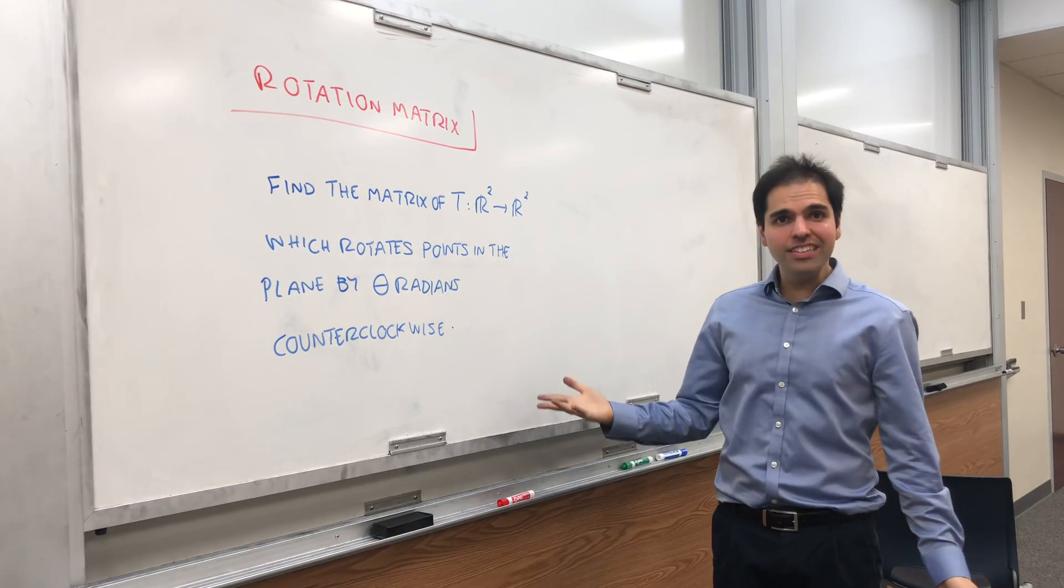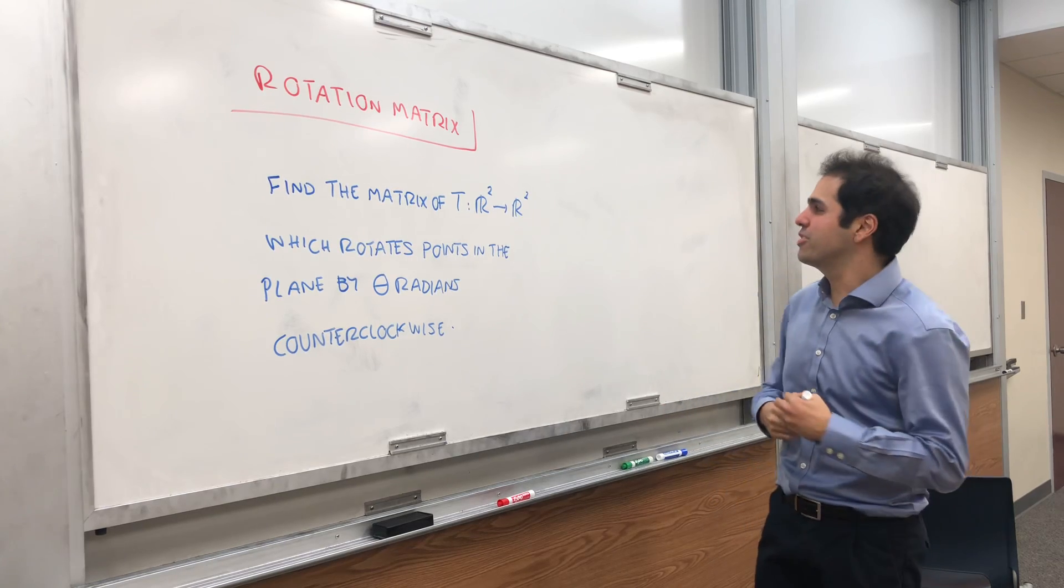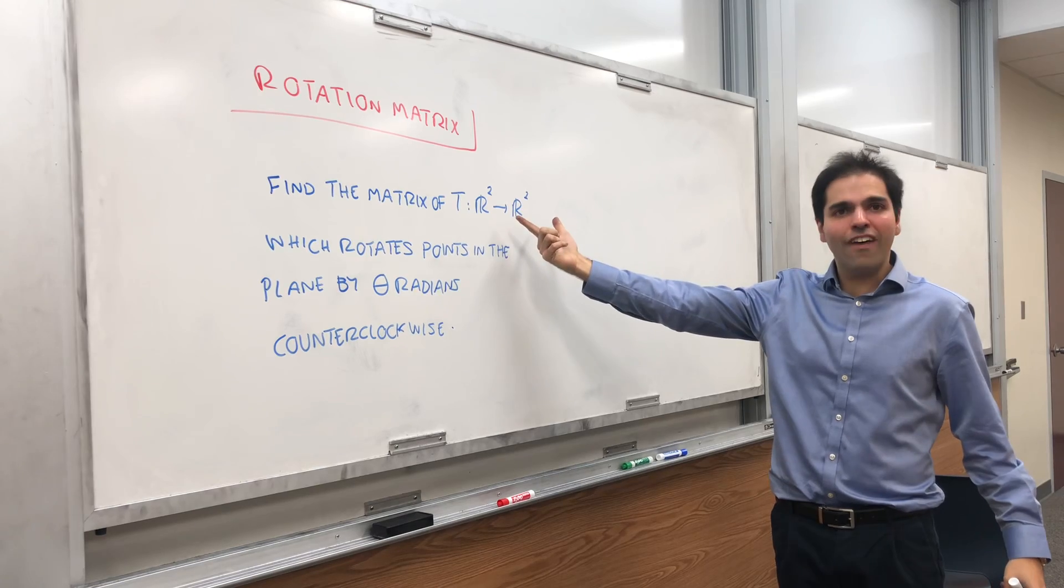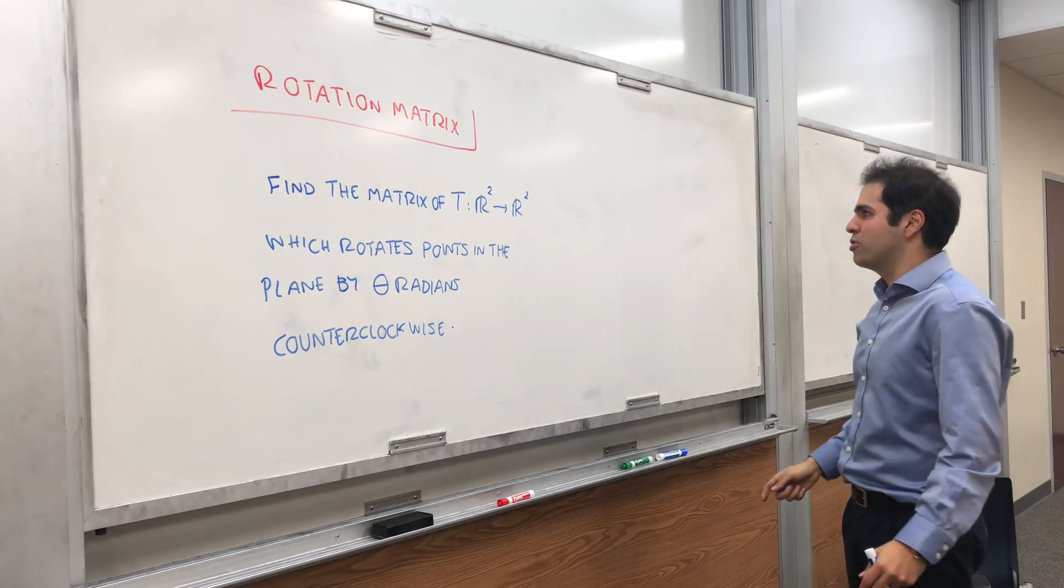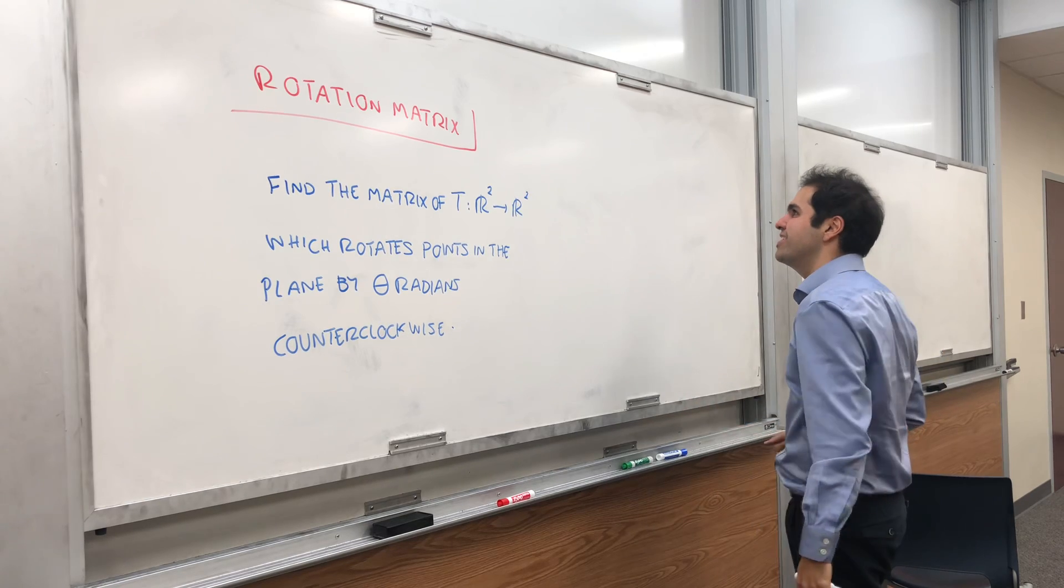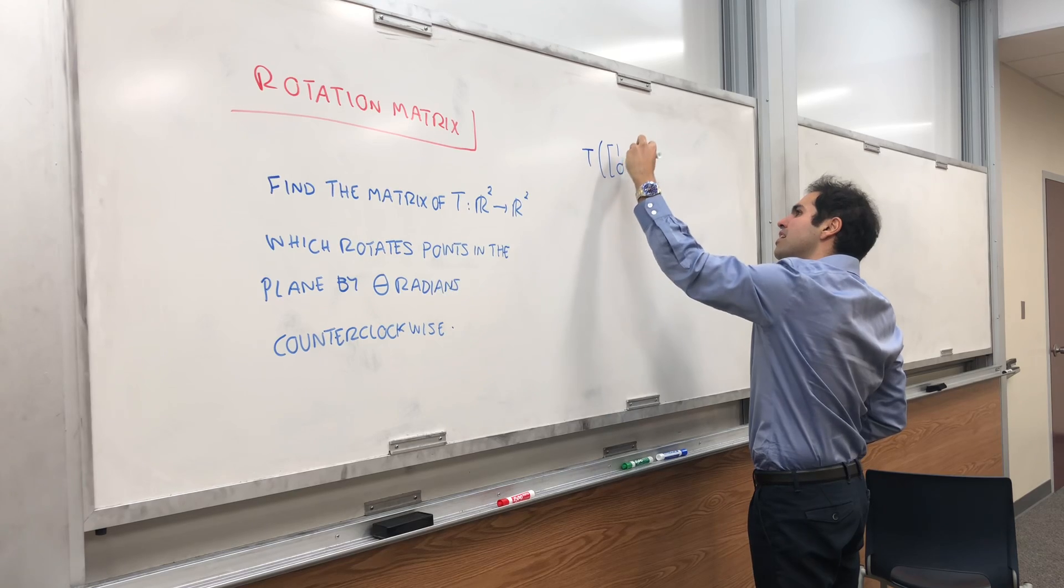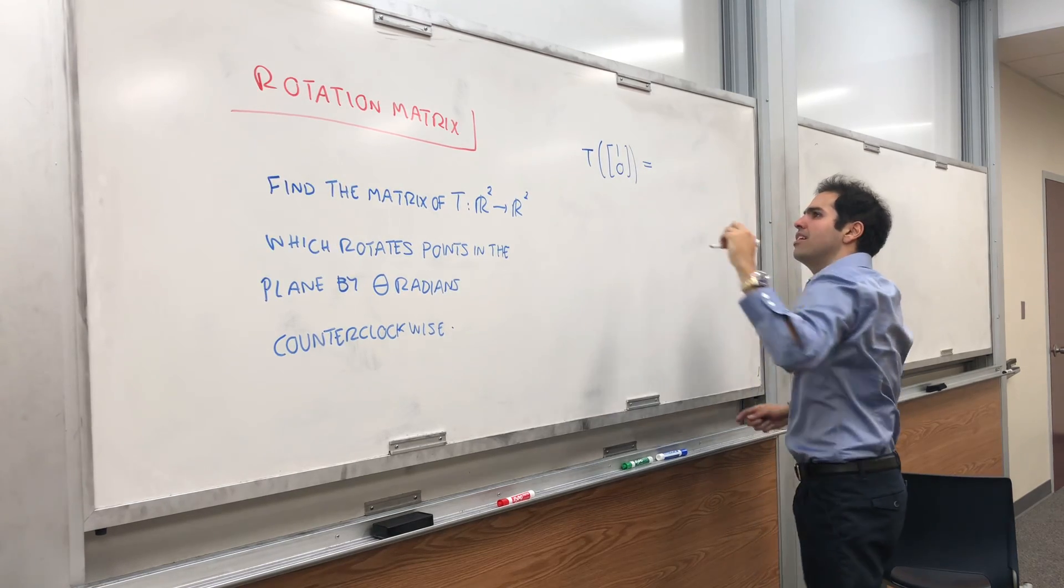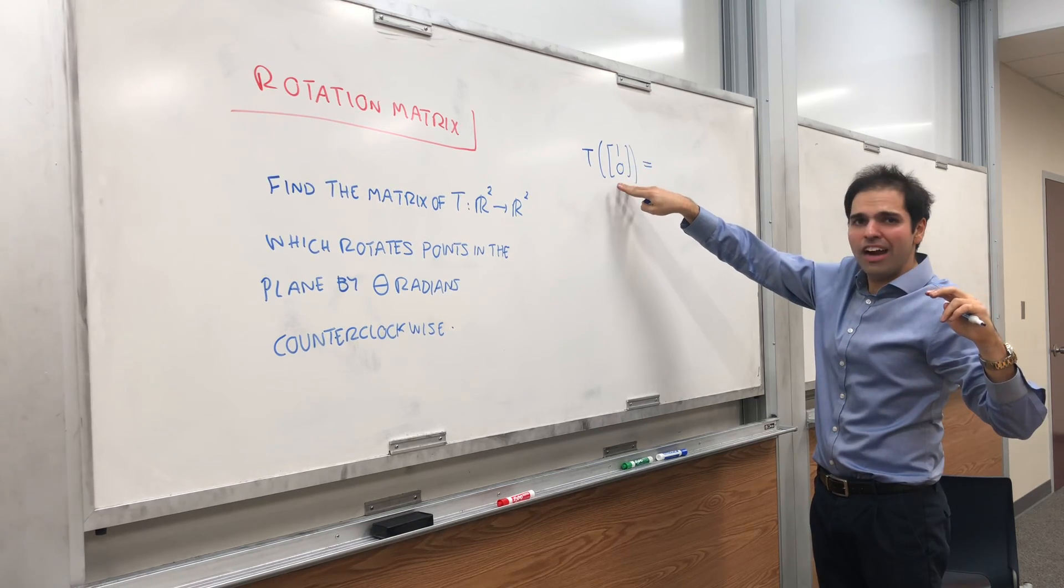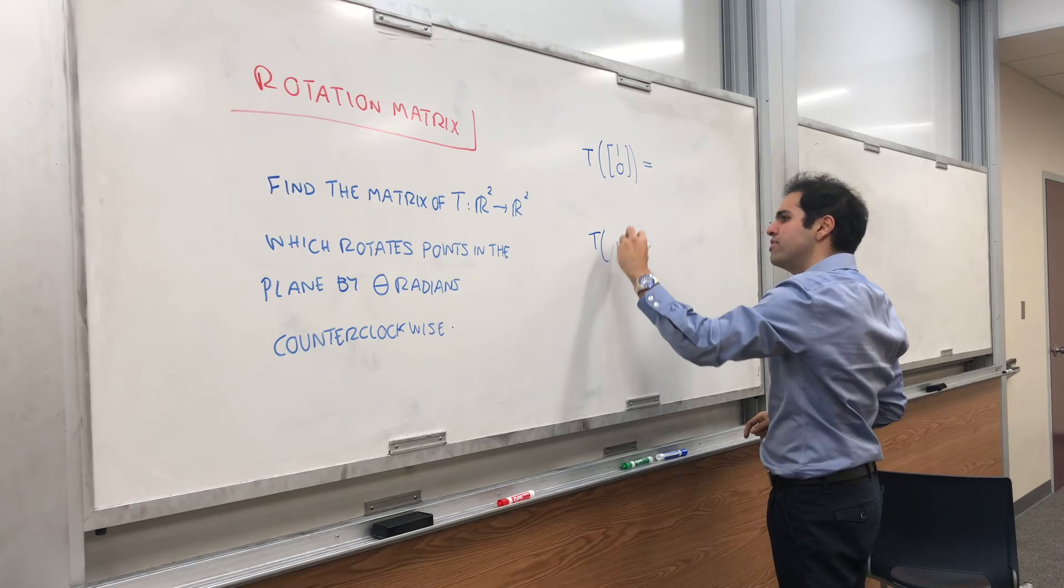And this also illustrates why it's so useful to find matrices of linear transformations and how to find them. Well, again, how do you find a matrix of a linear transformation? And by the way, I'm assuming it's a linear transformation. To find a matrix of a linear transformation, all you have to do is calculate T of (1,0) and T of (0,1).